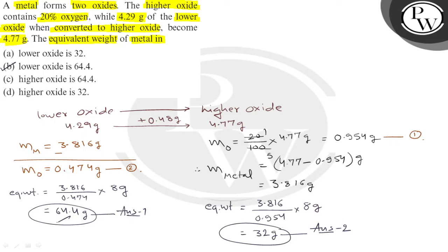In higher oxide is 64.5 gram, no, it's wrong. In higher oxide, equivalent weight is 32, absolutely correct. Option D is also correct. So, option B and option D are correct. I hope you understood, best of luck!